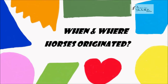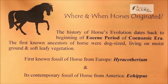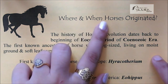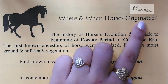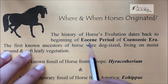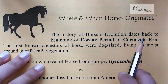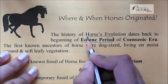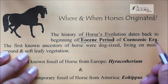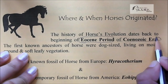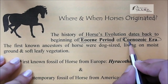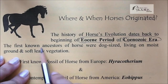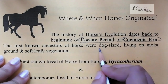After the classification of the modern horse, we will look at where and when horses originated. The history of horse evolution dates back to the Eocene period of the Cenozoic Era. The first known ancestors of the horse were dog-sized, living on moist ground and feeding on soft leafy vegetation.